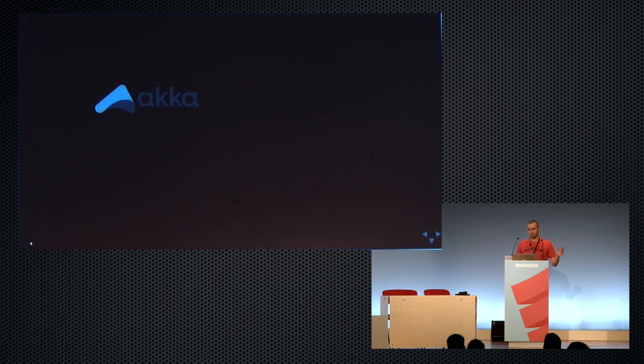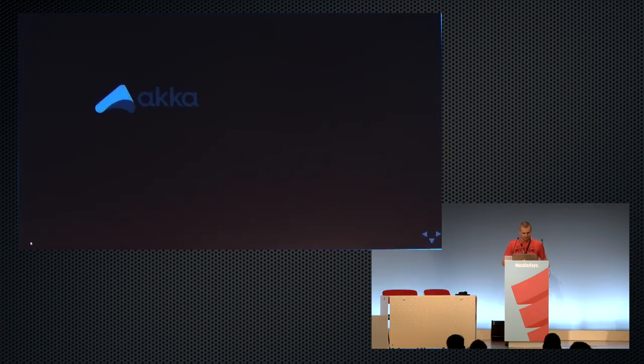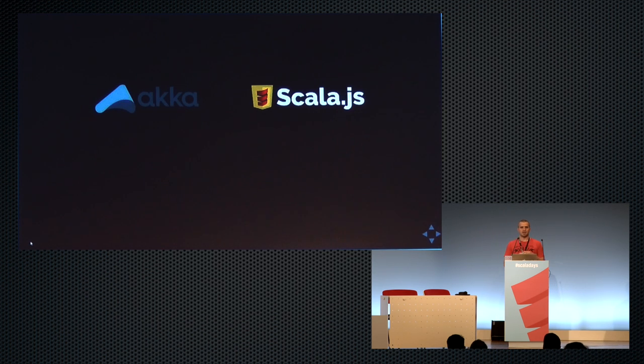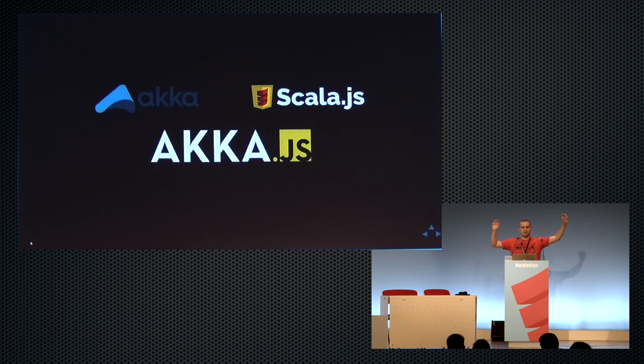We start with Akka.js. Everybody knows Akka — it enables you to use the actor model within your applications, and it is one of the two most popular and production-ready actor model implementations present right now in the industry. The other one is Erlang. On the other side, we have Scala.js, the second compiler of Scala, which enables you to write Scala code that can be translated to JavaScript and run on any JavaScript virtual machine. From those two parts, we want to use Akka.js — the actor model within our Scala.js applications.